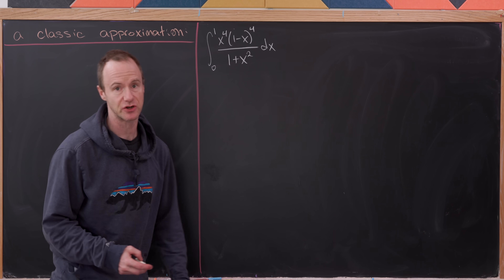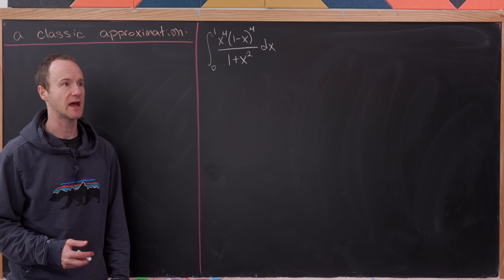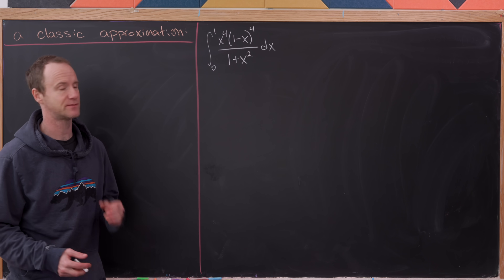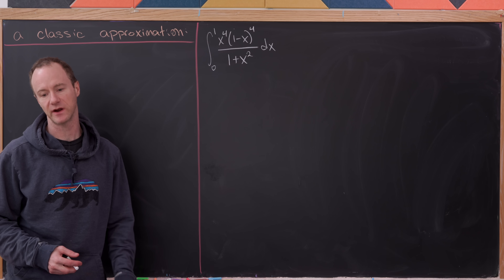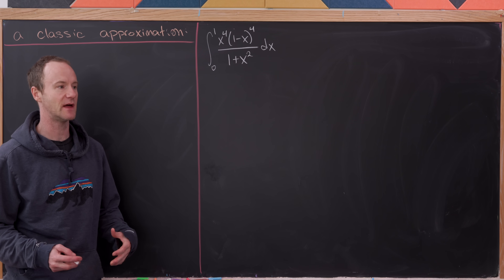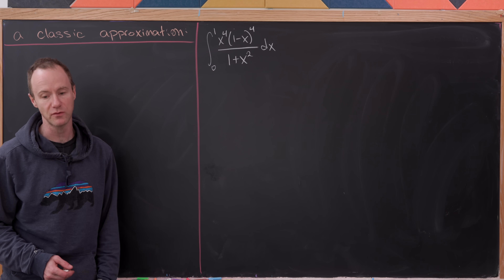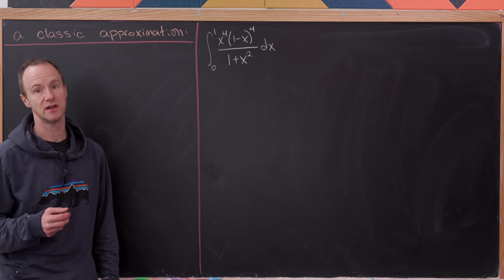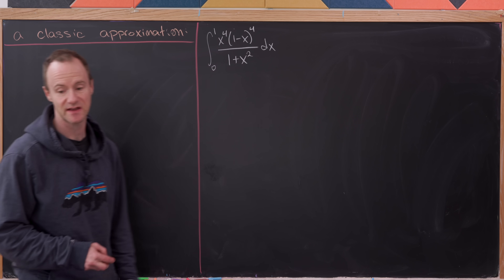This is a rational function — we've got a polynomial in the numerator and the denominator. The degree of the numerator is degree 8, because we have a degree-4 term multiplied by another degree-4 term. The denominator is degree 2, and any time the degree of the denominator is less than or equal to the degree of the numerator, you generally need to do polynomial long division before evaluation. So let's do just that.